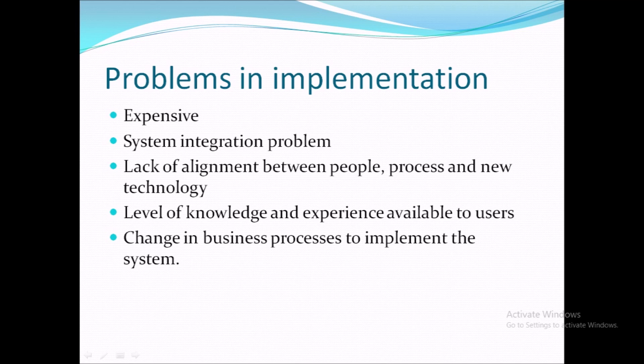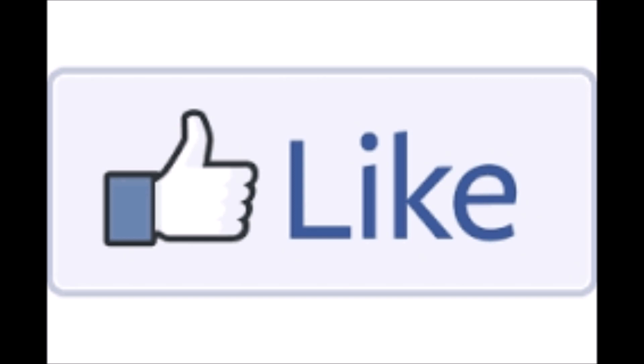Fourth, lack of knowledge and experience among users — particularly those from an age group where technology is not common — making them reluctant to adopt the new system. Fifth, change in business processes required to implement the system. When an organization implements ERP, existing business processes A, B, C, D, E must all be reviewed and changed. This concludes Units 5 and 6 on supply chain management. Thank you.